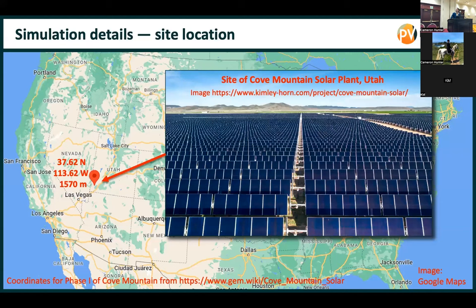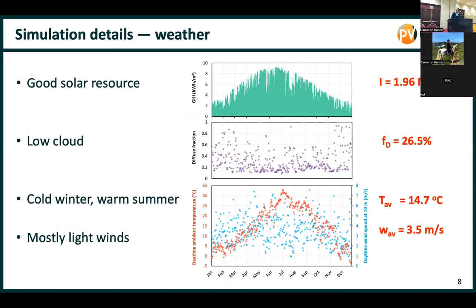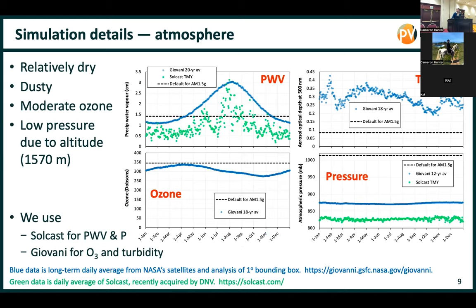The simulations are at a site in southwest Utah. We're not replicating this site — just using it for the weather, which is Solcast TMY data. It's a good solar resource: low cloud, cold in winter, warm in summer. We're also interested in atmospheric effects because that changes the spectrum. This site is relatively dry and dusty, so turbidity is much higher than the value used in the AM1.5G spectrum — that's one of the key differences in the spectral results. The pressure is lower due to altitude, but that has very little impact on the spectrum.